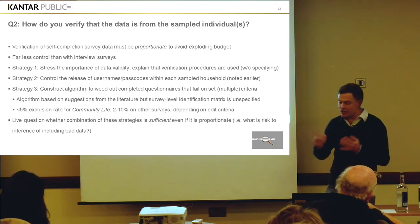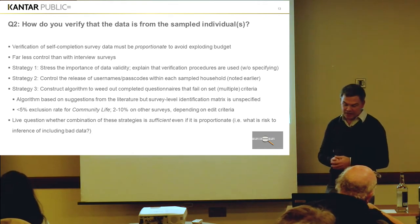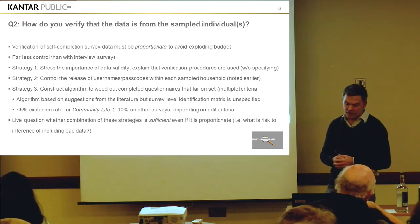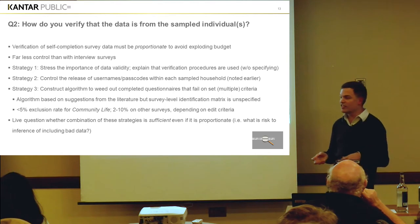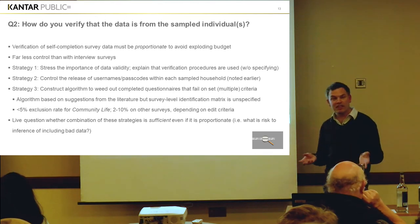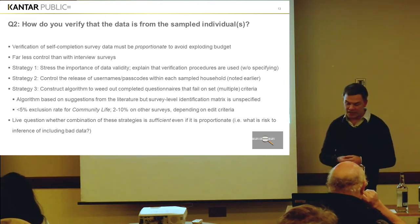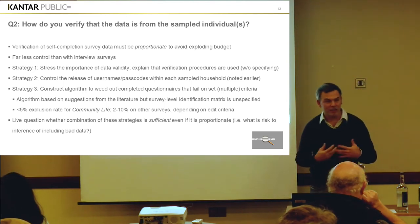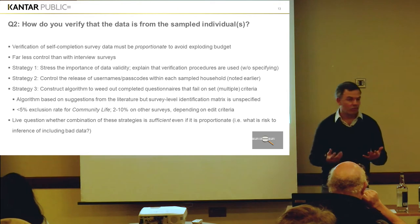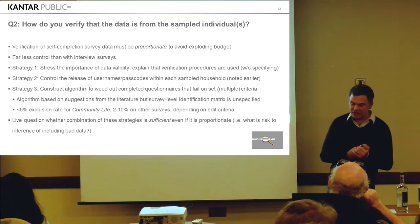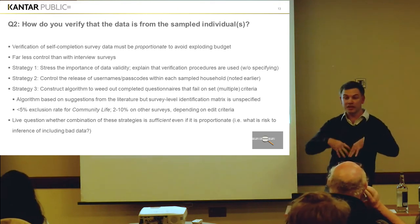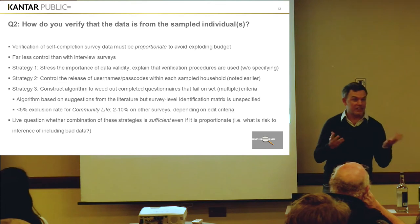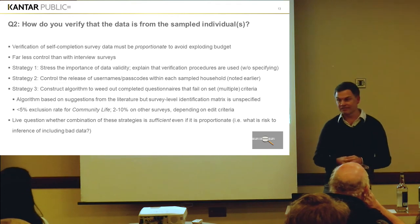We can generally live with that — we'll just do a larger sample to accommodate it. It's certainly a live question whether the combination of these strategies is sufficient, even if it is in fact proportionate. In other words, what is the risk to inference of including bad data through failing to identify it?